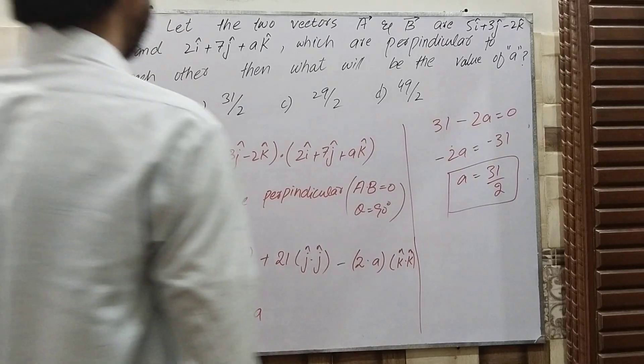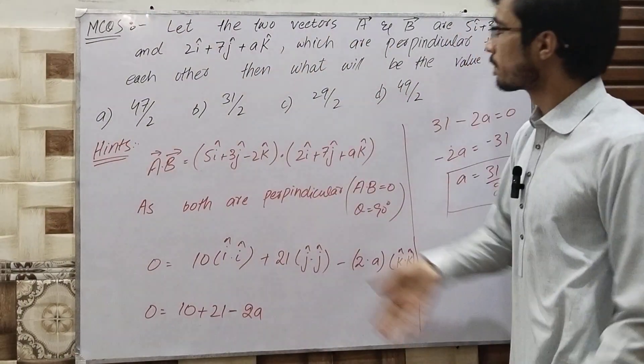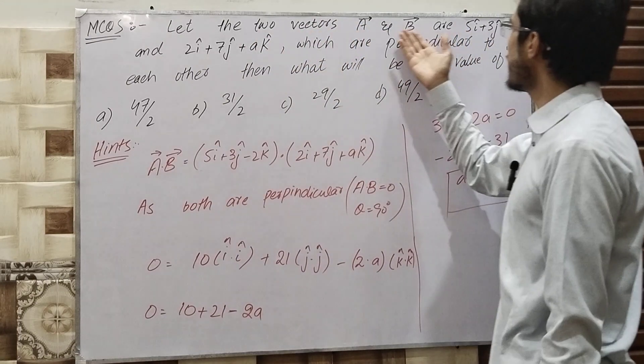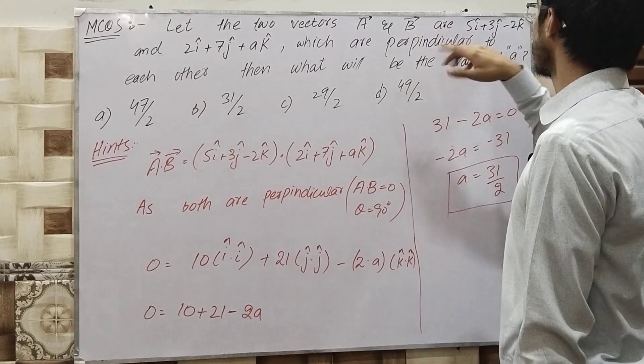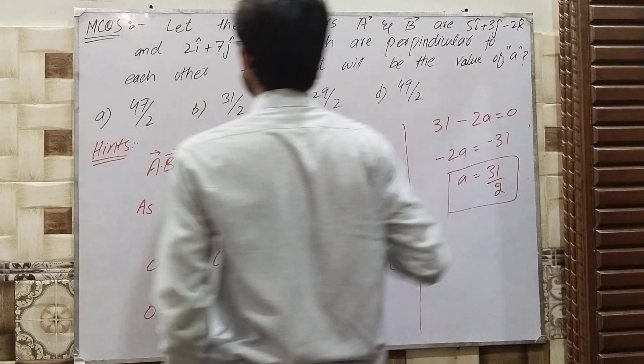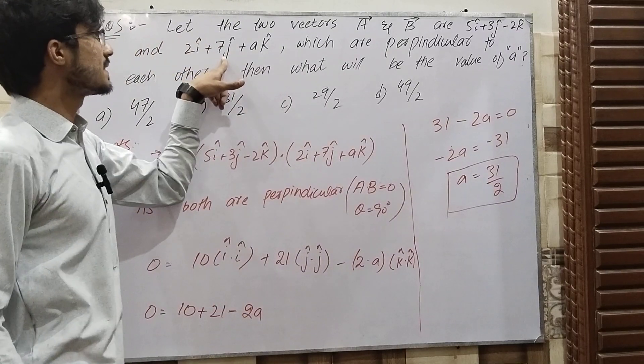Hello dears, this is an important question. Let the two vectors A and B be: A = 5i + 3j - 2k and B = 2i + 7j + ak.